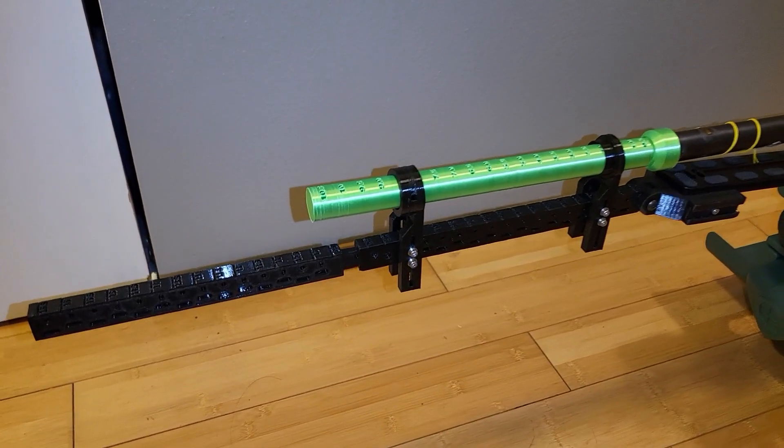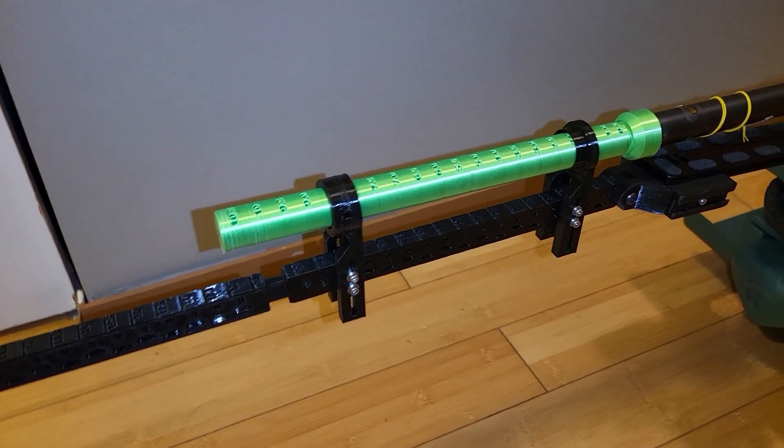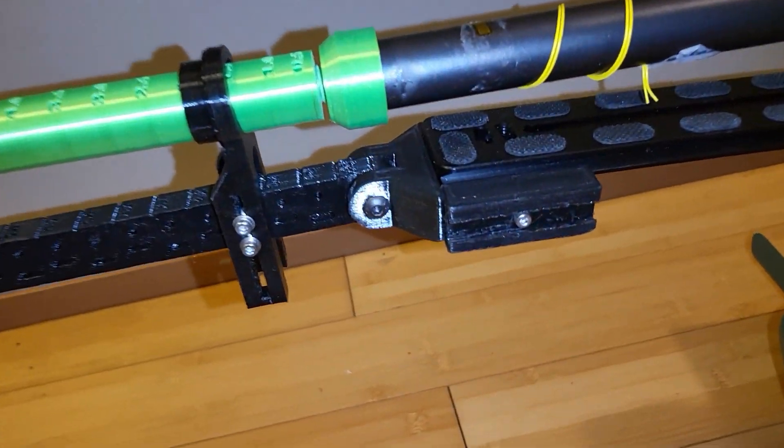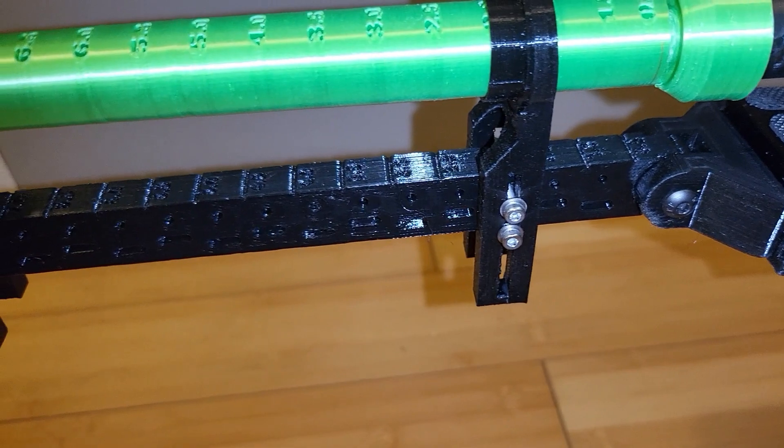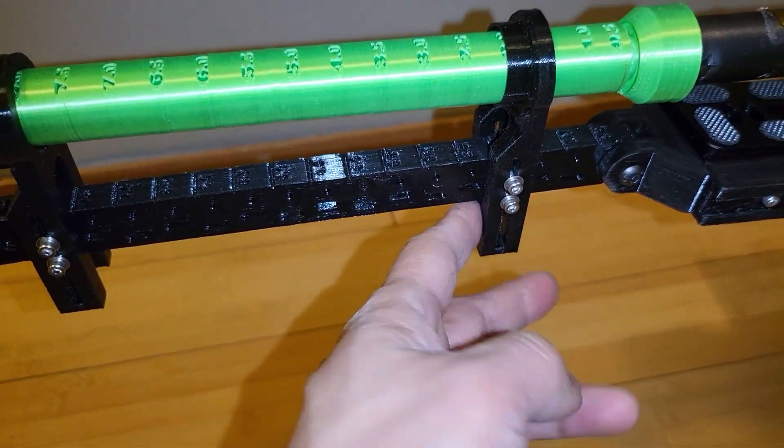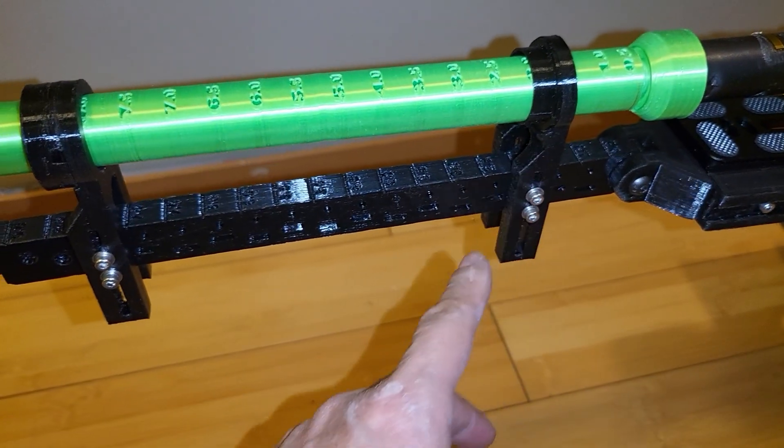OK, so I just finished 3D printing my chronograph for my CZ457. This is what it looks like. That's the rail for the proximity coil sensors.